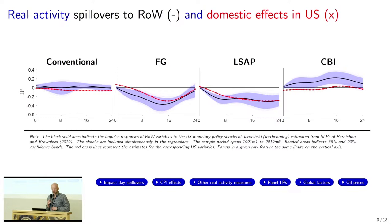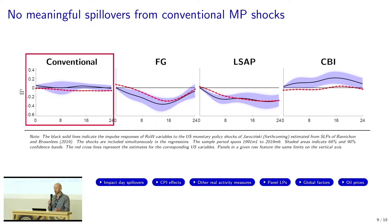Here you see the effects on real activity, both in the rest of the world in terms of spillovers — the black solid line — and in terms of domestic effects in the US — the red cross lines. Real activity is measured by IP, industrial production. The first panel shows the effects of what has been labeled as the conventional rate policy shock, then forward guidance, LSAP, and CBI effects. The first observation is that the conventional rate policy shock is not having any meaningful consequences, both in the US and in the rest of the world.